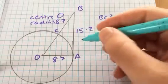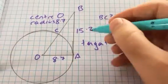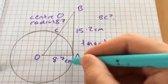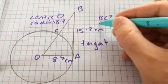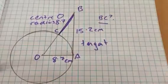And we've got a tangent here which is 15.2 centimeters, and we've been asked to work out what BC is. So what is this length here? What do I do?